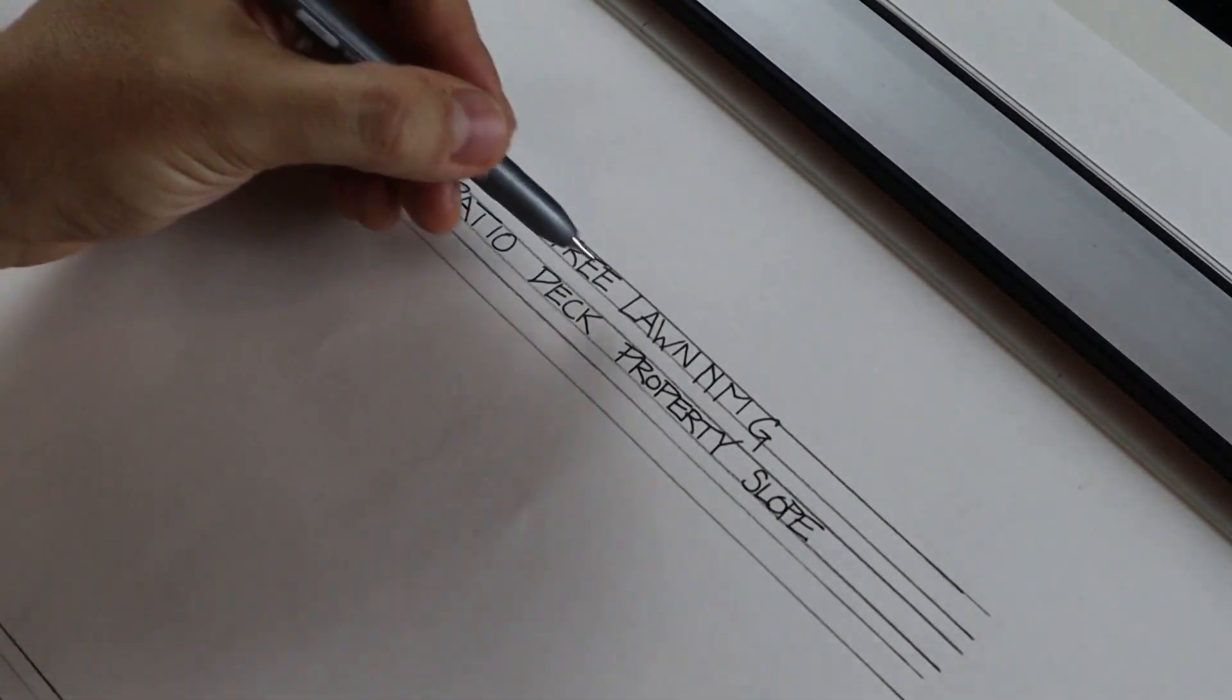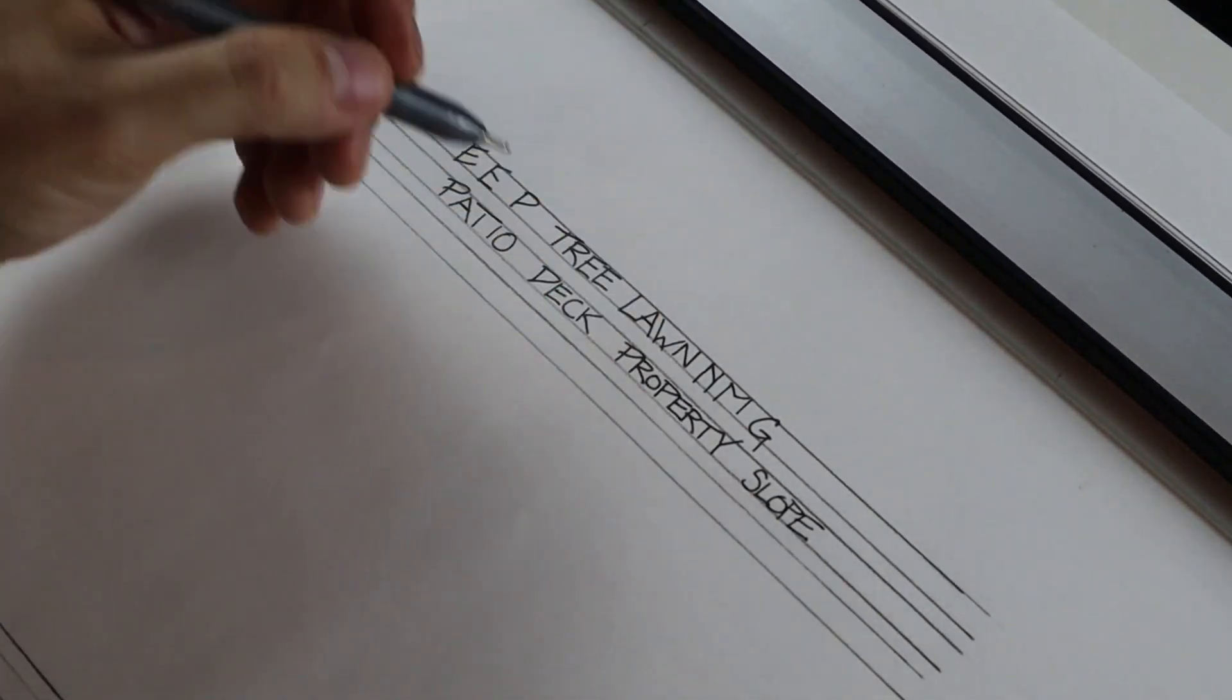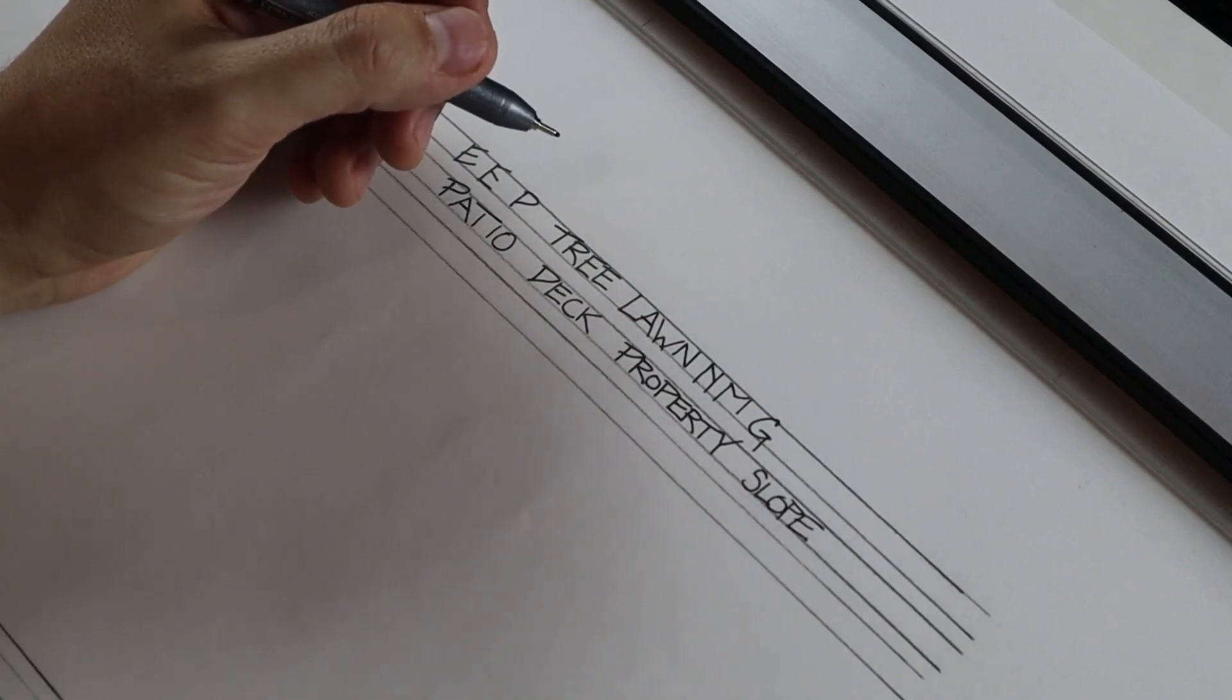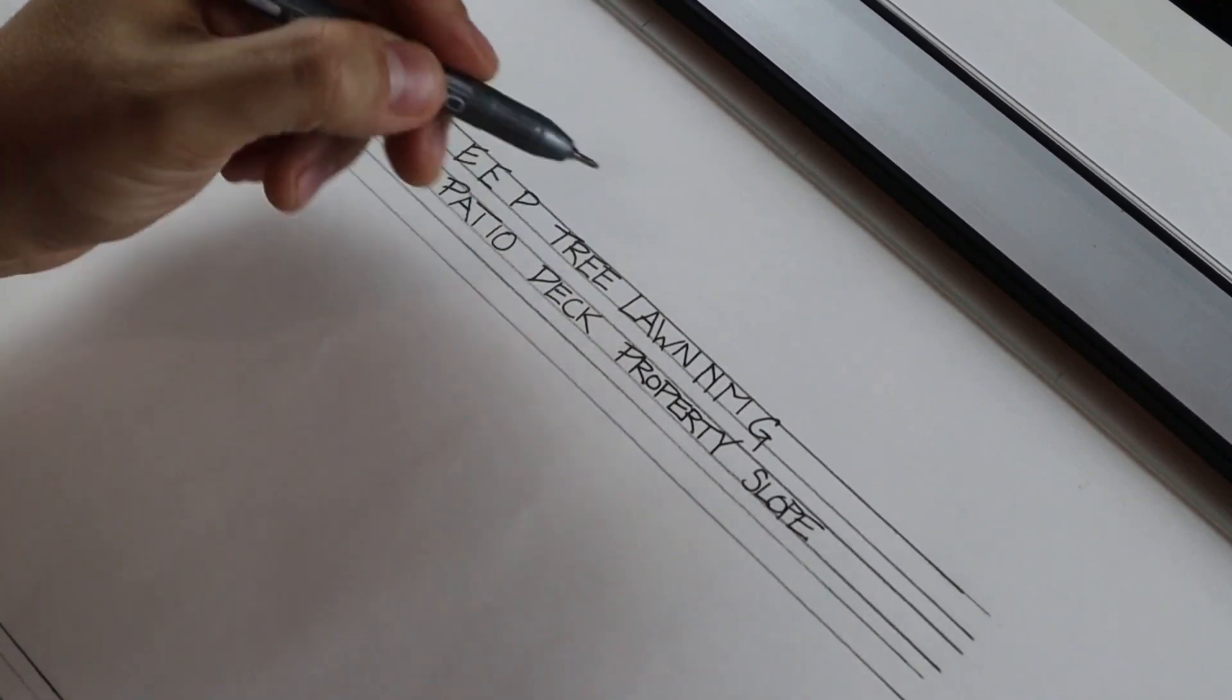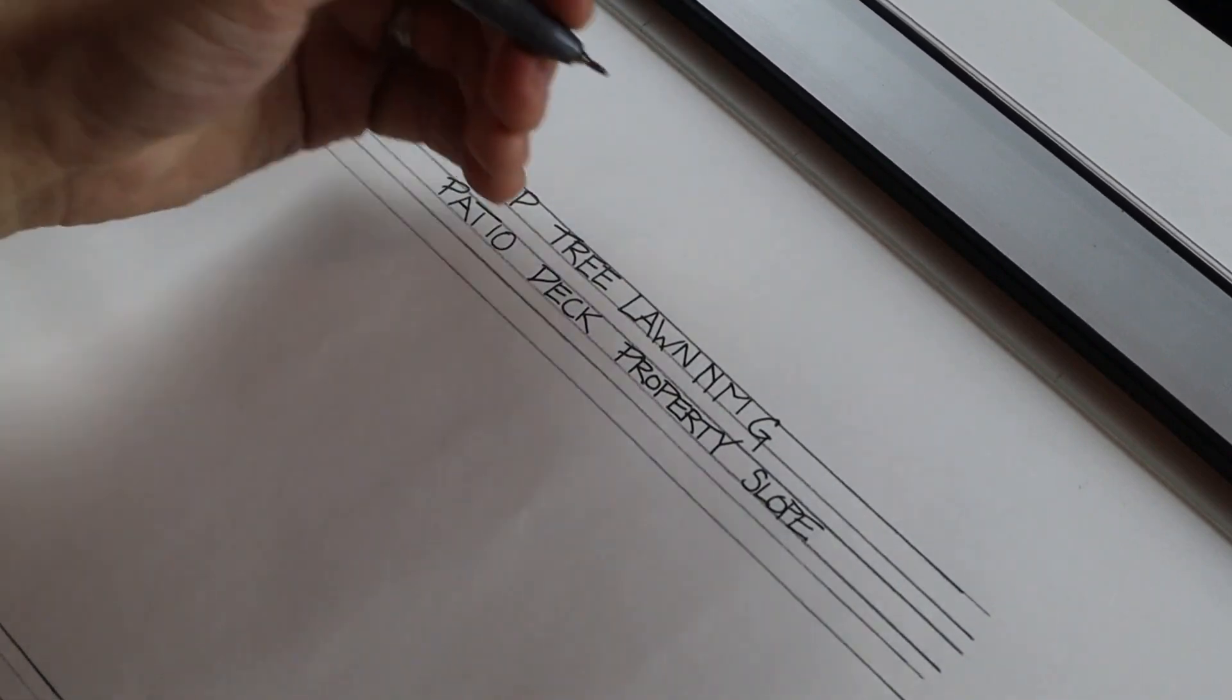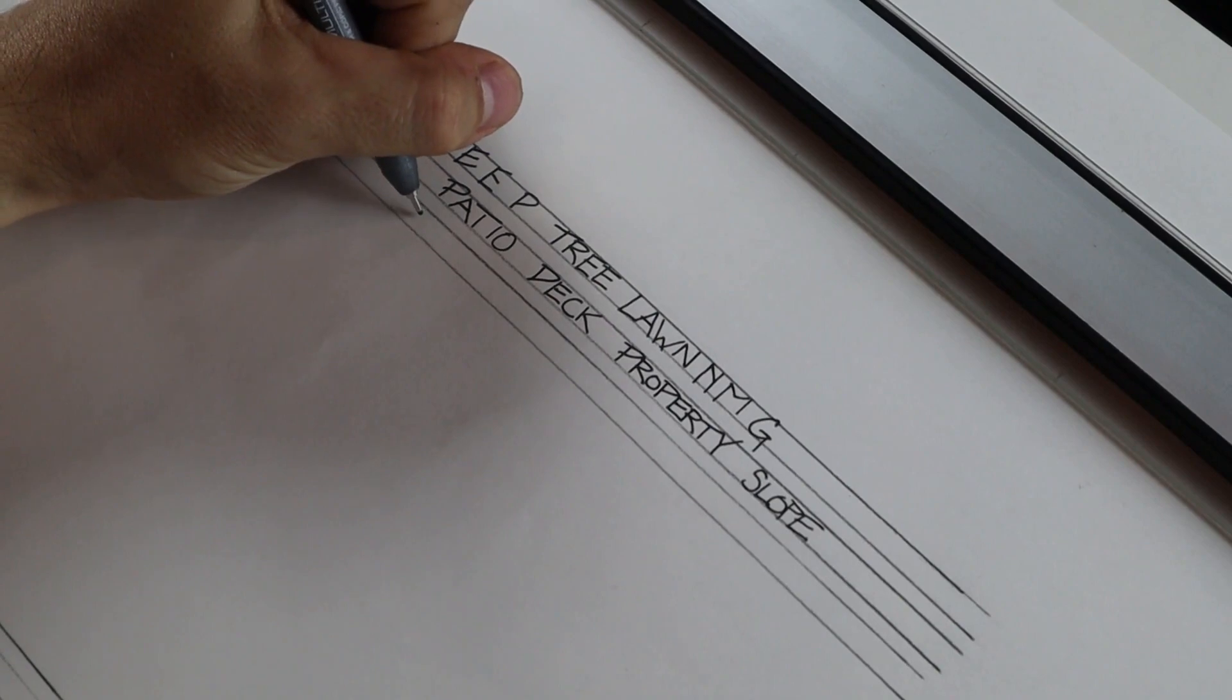So you have tree, lawn, patio, deck, property, slope. Those are nice six words to practice. You get a good amount of variation within them. So practice them a few times, you may get the hang of doing proper lettering. So we're going to do it one more time together. I'll see how many I could fit. We'll start with tree, and you can see there's some variability even with mine sometimes.